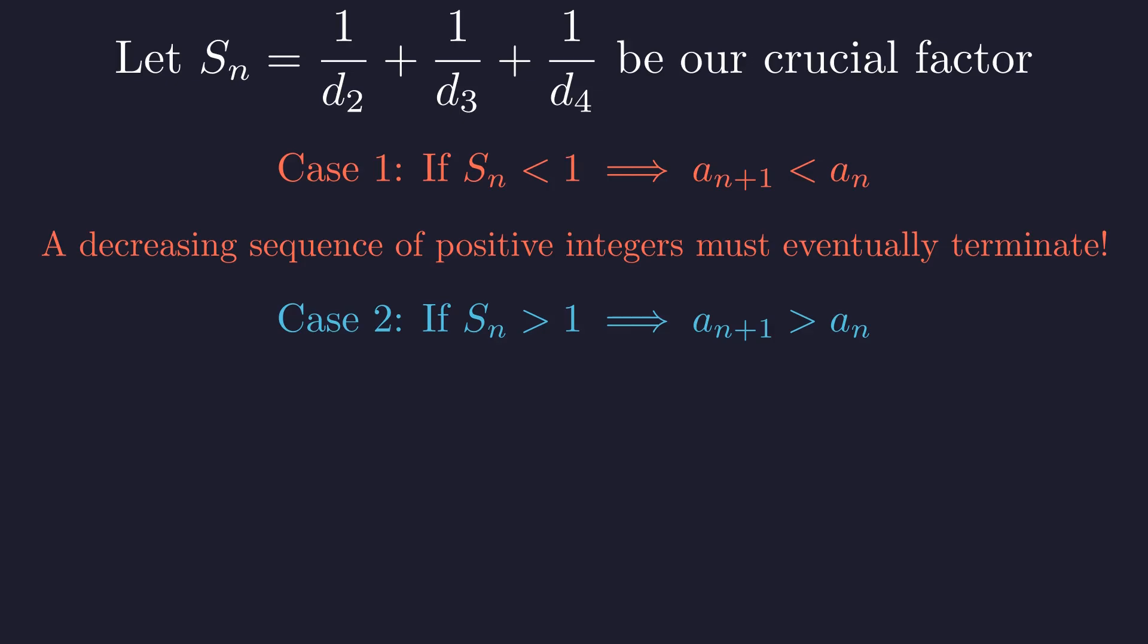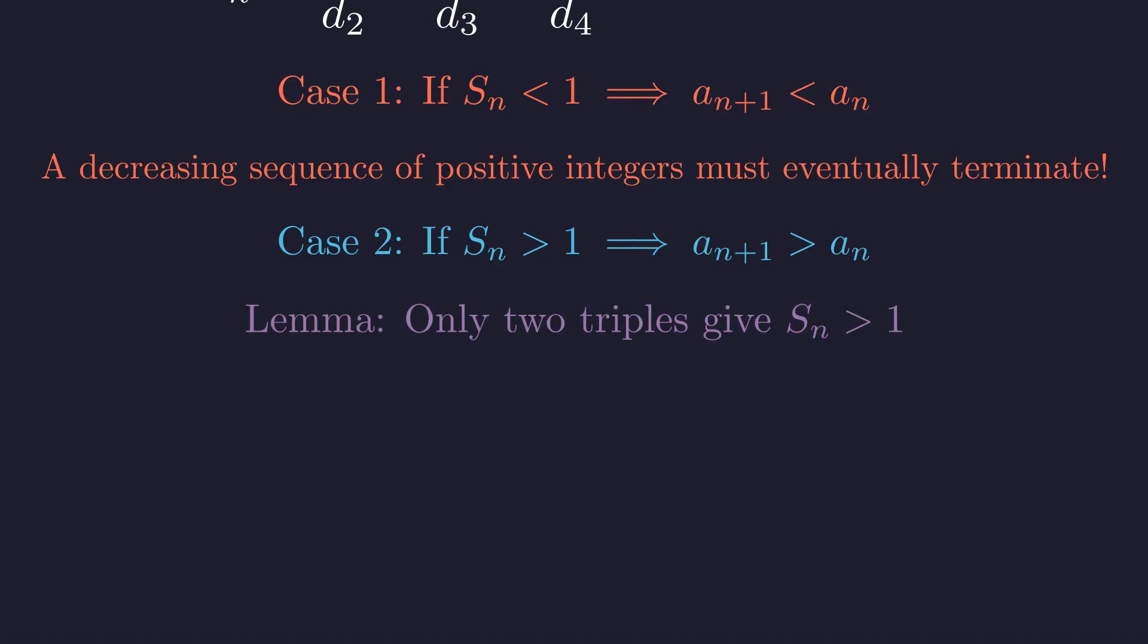Next, consider the case where S_n is greater than 1. Here, the sequence is strictly increasing. Let's determine for which sets of divisors S_n can be greater than 1. This occurs only when the divisors d2, d3, and d4 are very small.